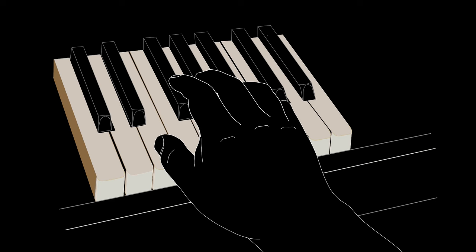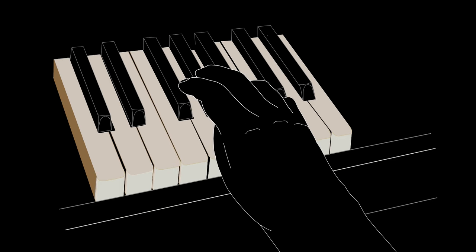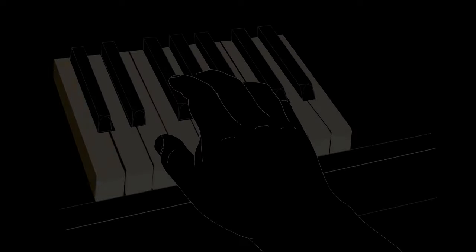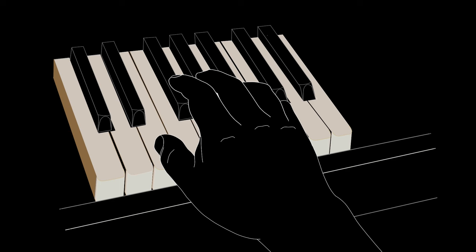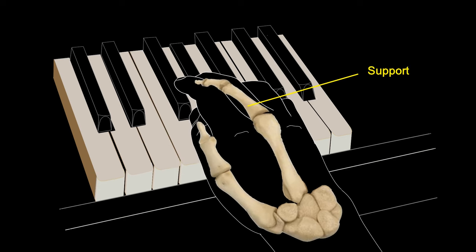For ascending scales in the right hand, or descending in the left, the thumb reaches and plays the target key, usually after the third or fourth finger. The support of the previously played finger is essential to deliver the thumb in extension, easiness, and precision.